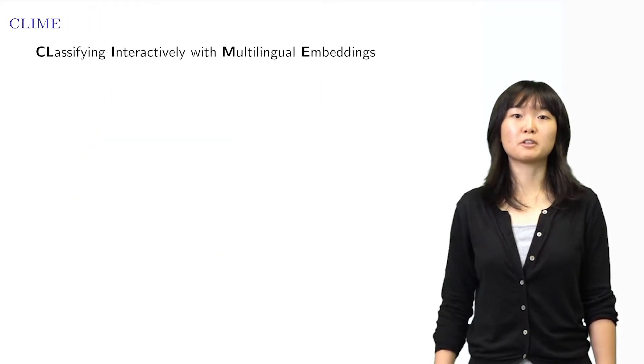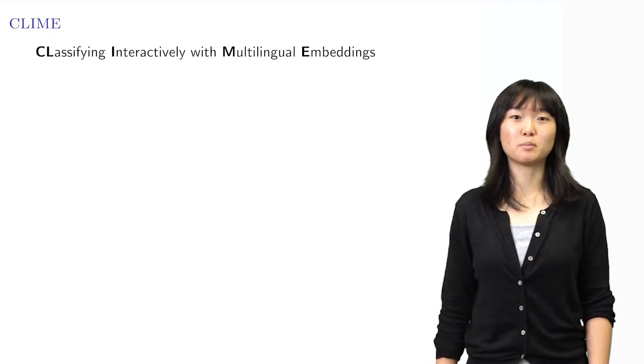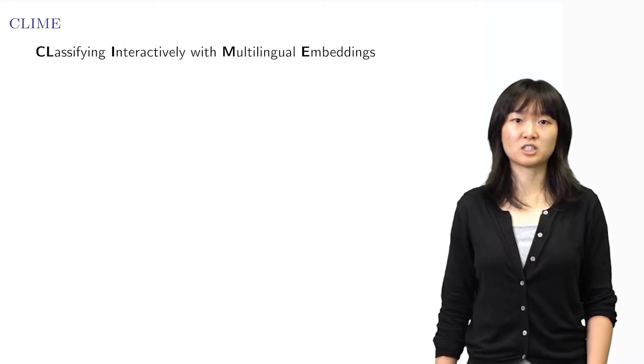To achieve this goal, we develop CLIME, which stands for Classifying Interactively with Multilingual Embeddings. This is a human-in-the-loop system that refines cross-lingual word embeddings for a classification task. CLIME has three main components.